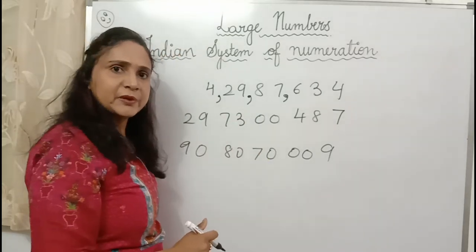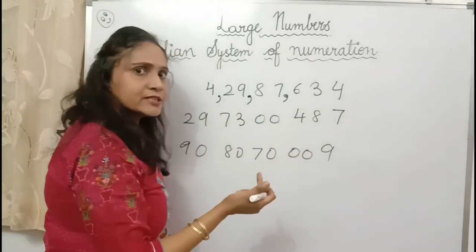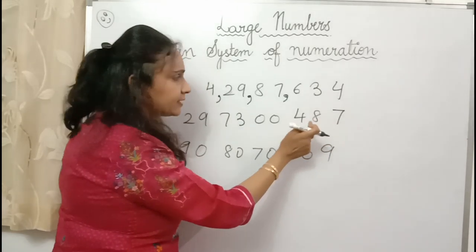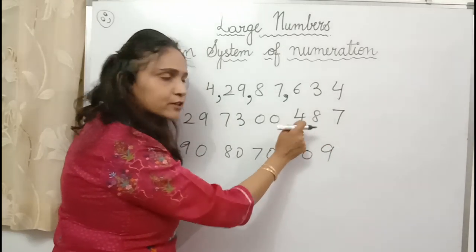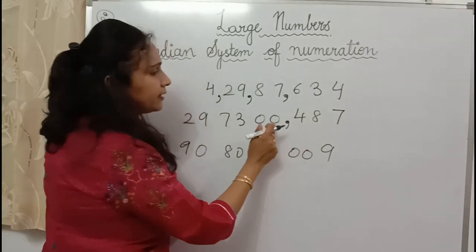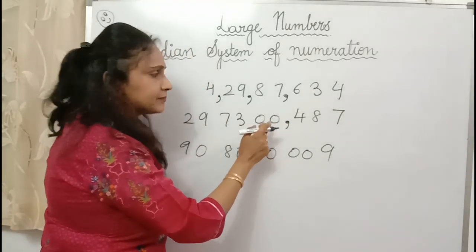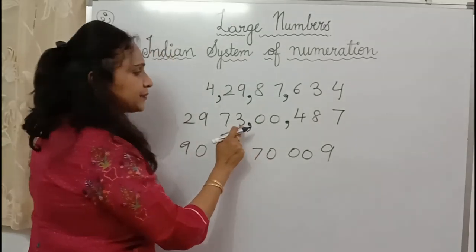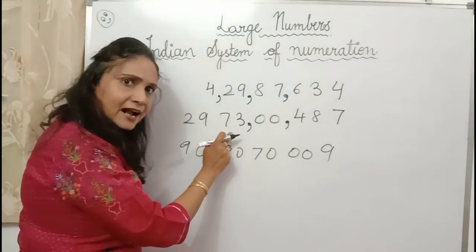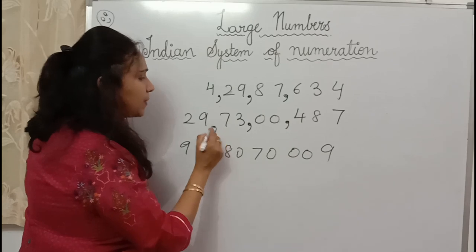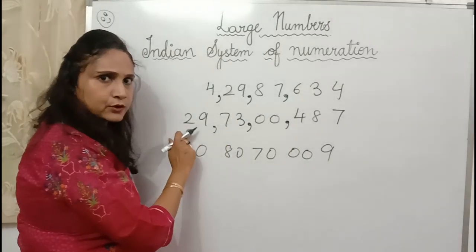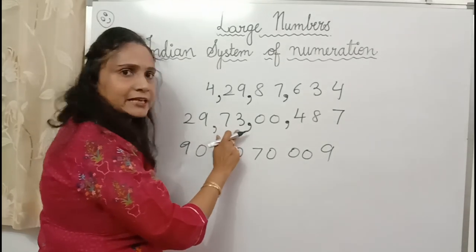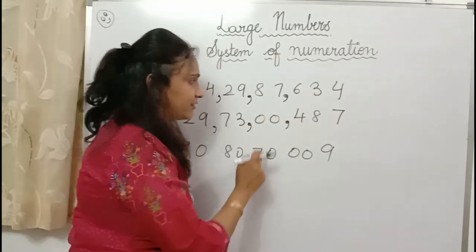Let's mark the period once again together. Ones, tens, hundreds — comma. Thousand, ten thousand — comma. Lakh, ten lakh — comma. Crore, ten crore. So let's read the number together: twenty-nine crore, seventy-three lakh, four hundred eighty-seven. If there is no number in any place, you will skip that place.